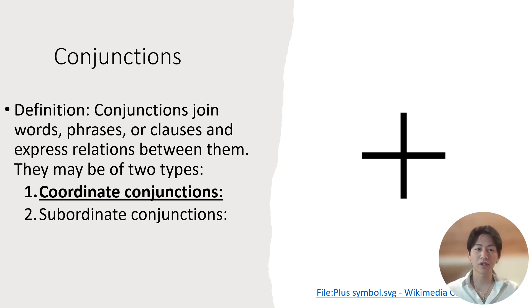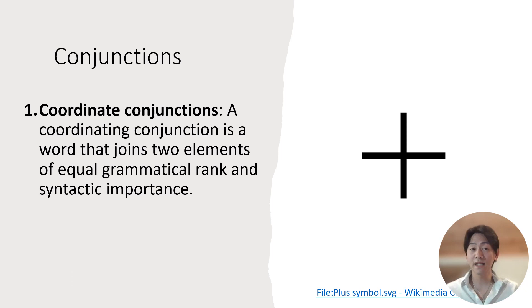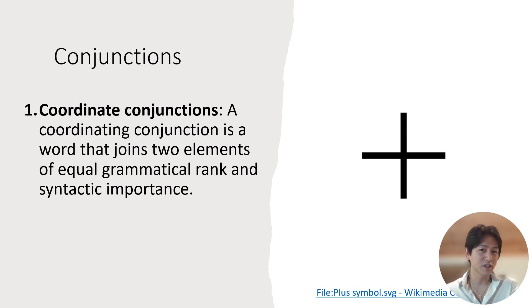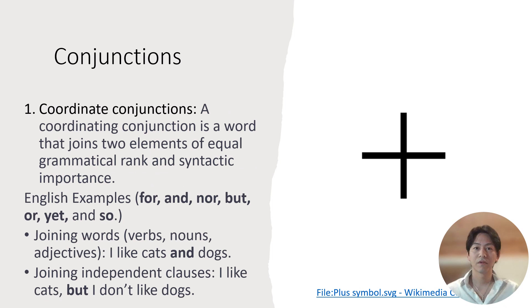In this lecture, we'll be specifically focusing on coordinate conjunctions — sometimes called coordinating conjunctions — which is a word that joins two elements of equal grammatical rank in syntactical importance. It almost functions as a plus/equal sign: adding two things and equal in the sense that they're both functioning in an equal way.